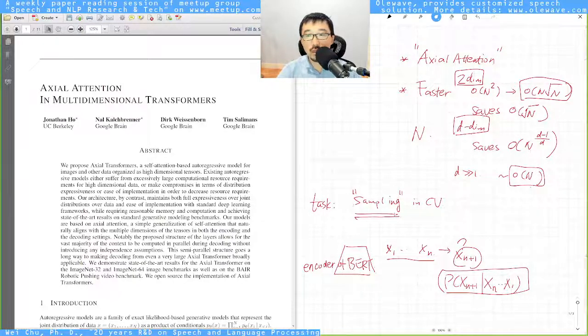The task of this paper is to do sampling in computer vision, which is very similar to training the encoder of BERT. Suppose I have a sequence of data x1 to xn, what should the next data xn+1 be.